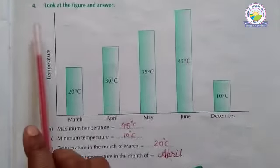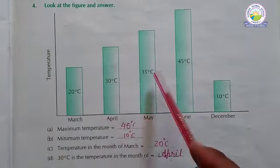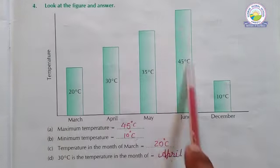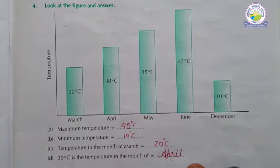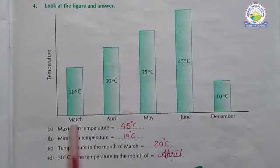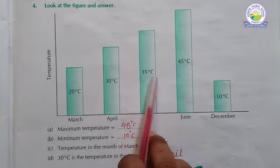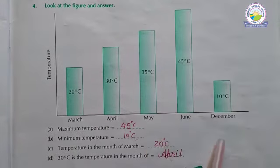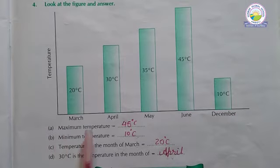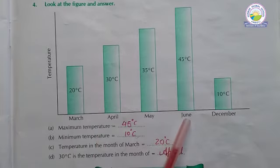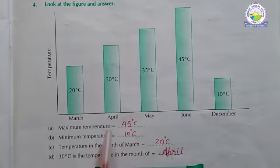Now see question 4 — look at the figure and answer. Here is a graph given in data handling. The months shown are: March 20 degrees Celsius, April 30 degrees Celsius, May 35 degrees Celsius, June 45 degrees Celsius, and December 10 degrees Celsius. Maximum temperature — which is the highest temperature? June, it is 45 degrees Celsius.